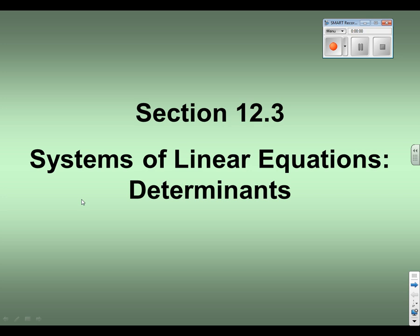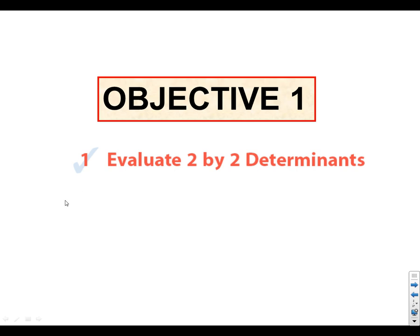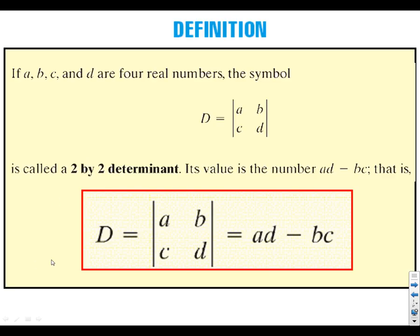So what is a determinant? Let's start by evaluating two by two determinants. If you have a two by two matrix, the determinant is going to be A times D — you're going to multiply down — minus B times C — you're going to multiply up. So multiply down minus multiply up.